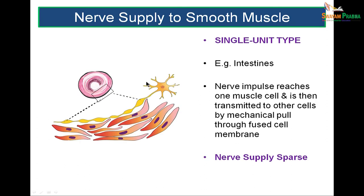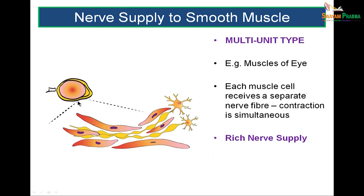Coming to nerve supply of smooth muscle: there are two types. The single unit type has fewer nerve fibers than muscle cells, as in the intestines. The nerve impulse reaches one fiber and is transmitted to the next by gap junctions, so nerve supply is sparse. In the multi-unit type — as in the eye — you need precise movements, so there are more neurons than muscle cells, with rich nerve supply, and each muscle cell receives a separate nerve fiber. Contraction is therefore simultaneous, fast, and precise.